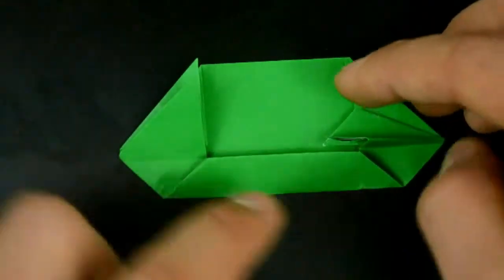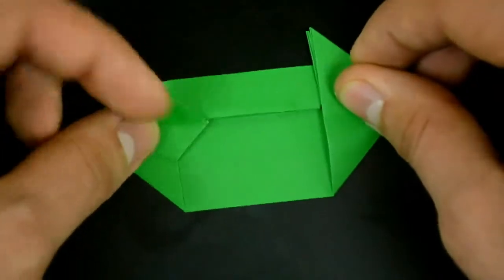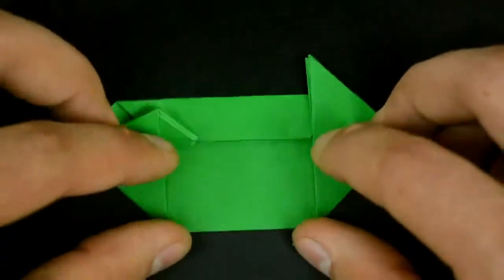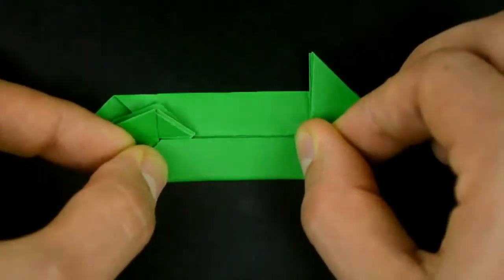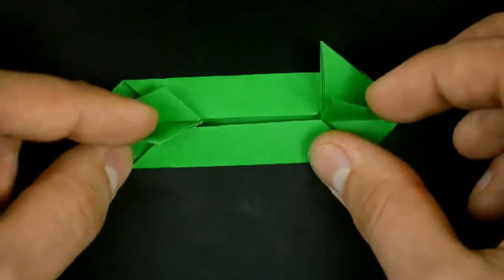Now rotate the paper. Bring the folds up again and fold the bottom edge to the middle. Open the folds like that.